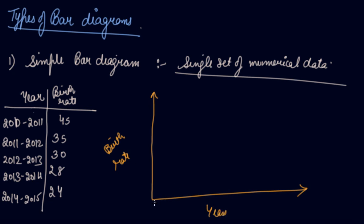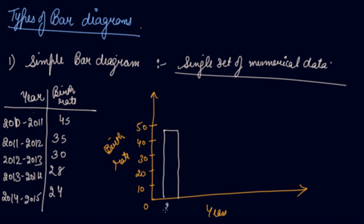So let's take the scale of 10, 20, 30, 40 and 50. Now let's make the bar diagrams. In the year 2010, the birth rate is 45.